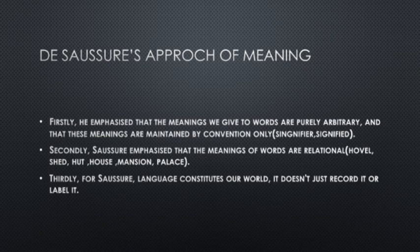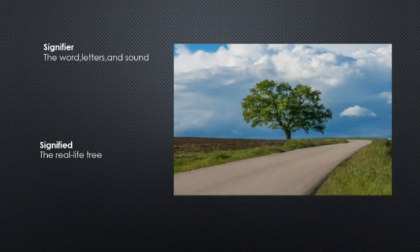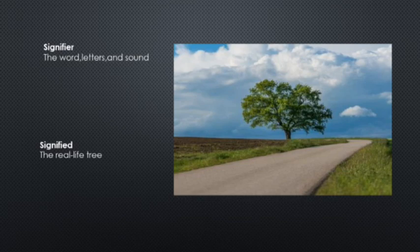First of all, Saussure says that the meaning of any word is attached to it arbitrarily — there is no natural relationship between the signifier and the signified. For example, a word is a signifier.